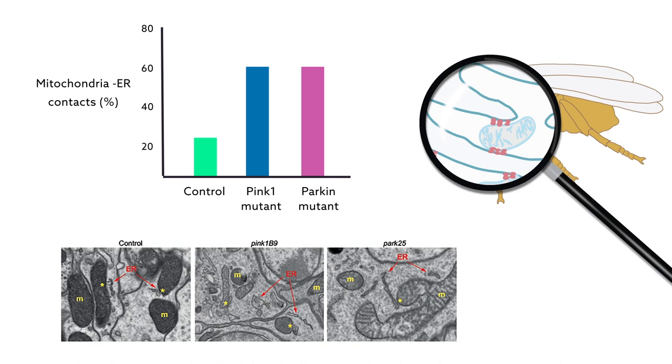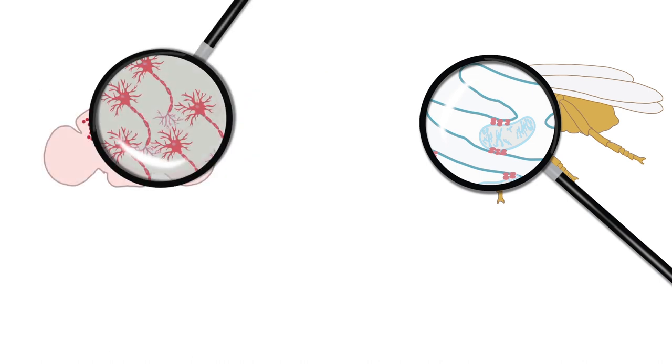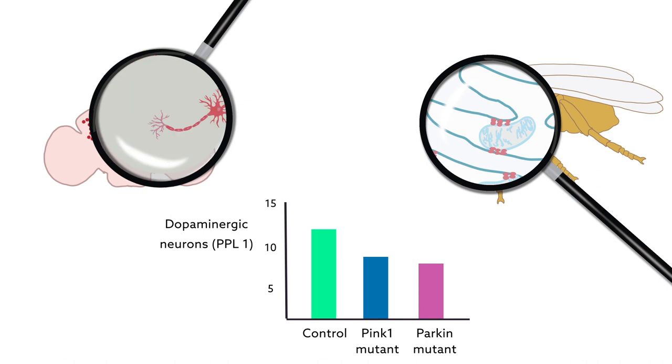These contacts are not good for brains. Mutant flies, which have more of them, have fewer dopaminergic neurons.